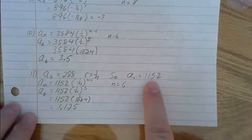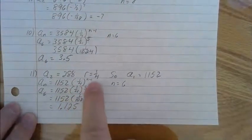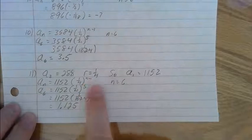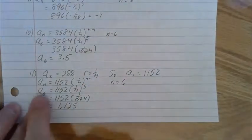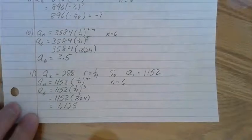So then you can use your formula: the first term times your common ratio to the n minus 1, n is 6, and you go through and work it out. So our 6th term is 1.125.